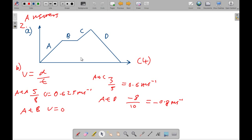So now for part B, we're calculating the velocity at different stages of the baby's journey. So at A, it would be 5 over 8 equaling 0.625 meters per second. At B, v equals 0. At C, 3 over 5 equals 0.6. And at D, minus 8 over 10 equals minus 0.8 meters per second. And she's going in a different direction to all her previous velocities.